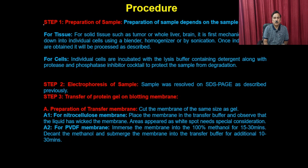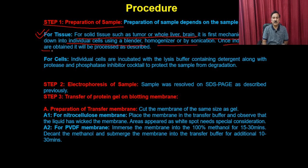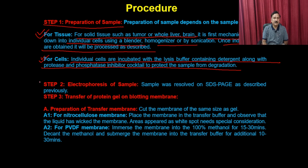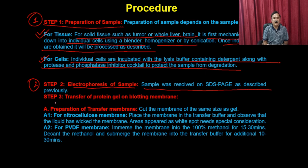Step 1: sample preparation. For solid tissue such as tumor, liver, or brain, the tissue is mechanically broken down into individual cells using a blender, homogenizer, or biosonication. Individual cells are then incubated with lysis buffer containing detergent along with a protease and phosphatase inhibitor cocktail to protect the proteins from degradation. Step 2: electrophoresis — the sample is resolved on SDS-PAGE.